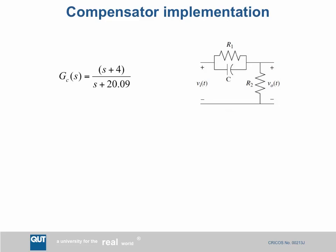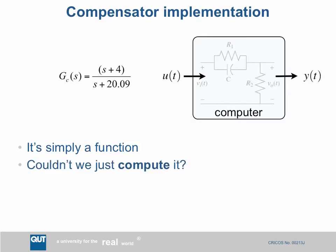Here's an example compensator: (s + 4) / (s + 20.09), and that's how you'd implement it with resistors and capacitors. The control design problem is: given the transfer function GC, how do you choose R1, R2, and C? But another way to look at this transfer function is to say it's simply a mathematical function — so instead of implementing it with resistors and capacitors, couldn't we just compute it? If we know the input, we can compute the output.